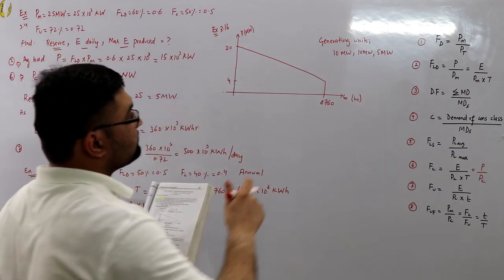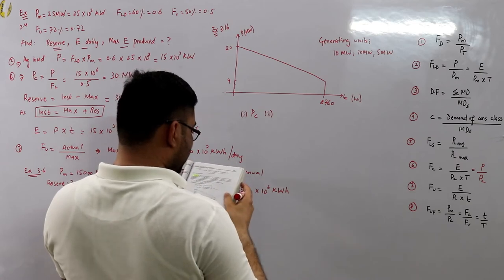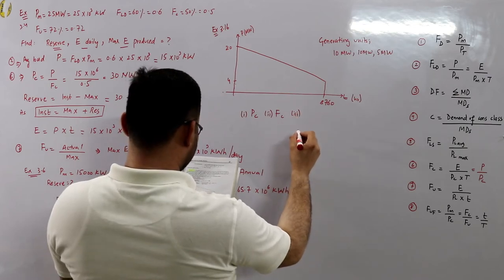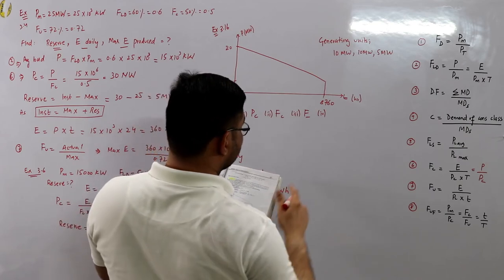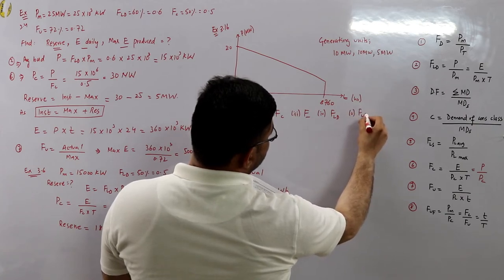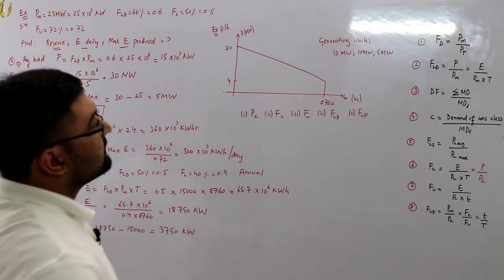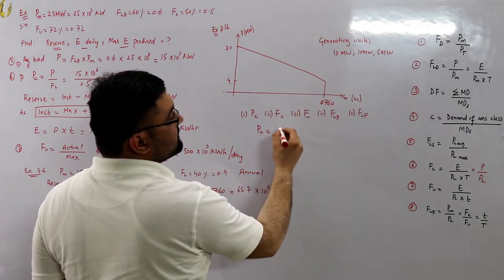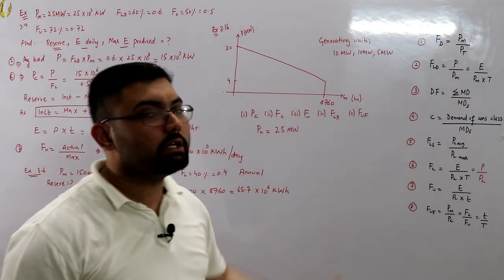Determine: the installed capacity, the plant capacity factor, the units generated per annum, the load factor, and the utilization factor. The installed capacity is the sum of all generating units: 10 + 10 + 5 = 25 megawatts. The average demand P is the average of the two endpoints of the straight-line load curve: (4 + 20) ÷ 2 = 12 megawatts.